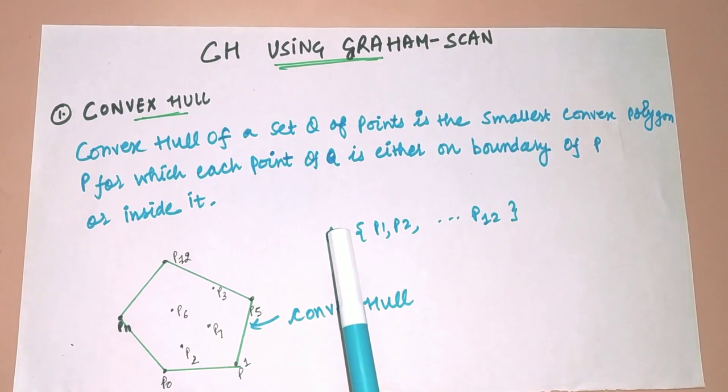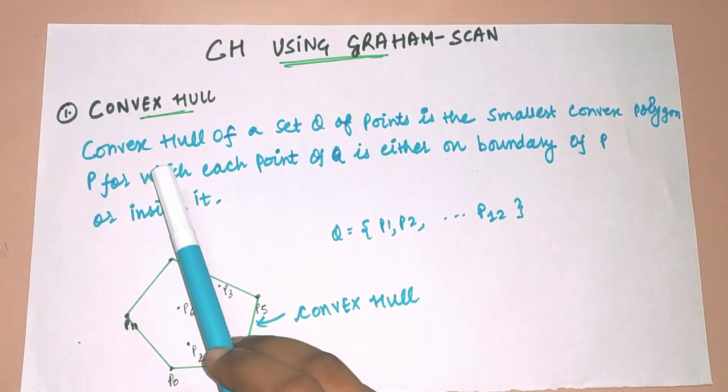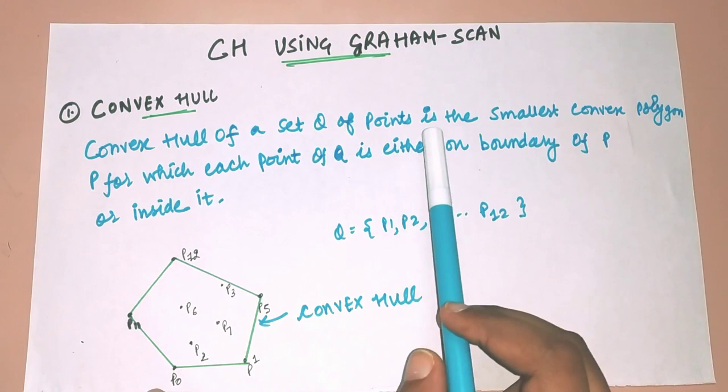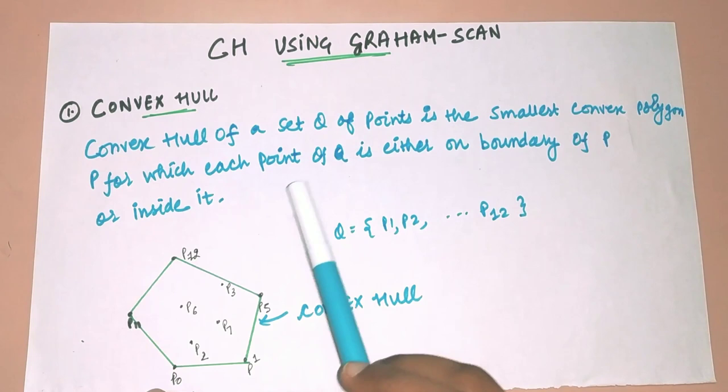Hello guys, welcome back to my channel. Today's topic is Convex Hull using Graham Scan. Before understanding Graham Scan, let's understand what convex hull is. According to its standard definition, convex hull of a set Q of points is the smallest convex polygon P for which each point of Q is either on the boundary of P or inside it.